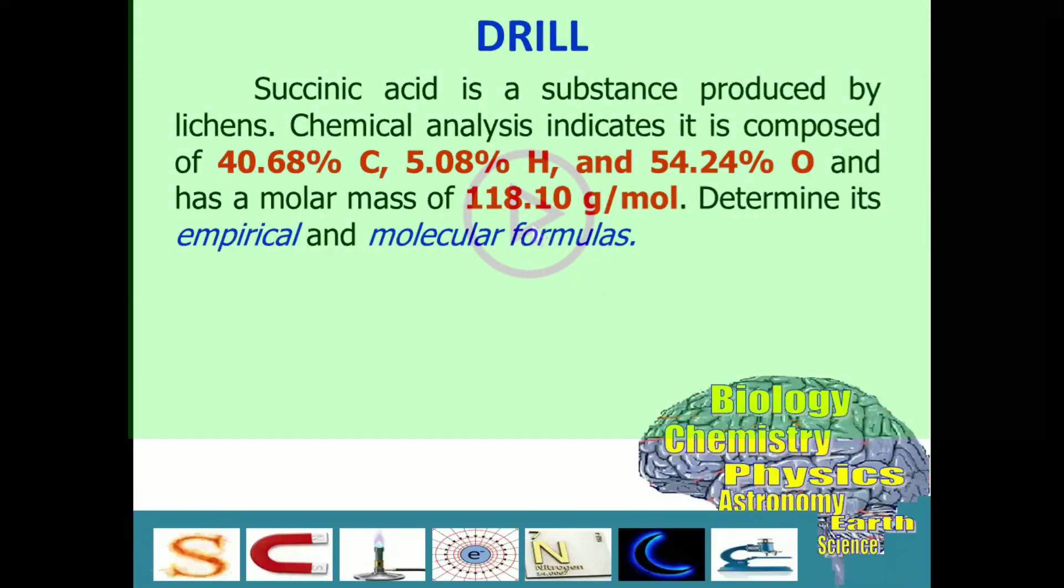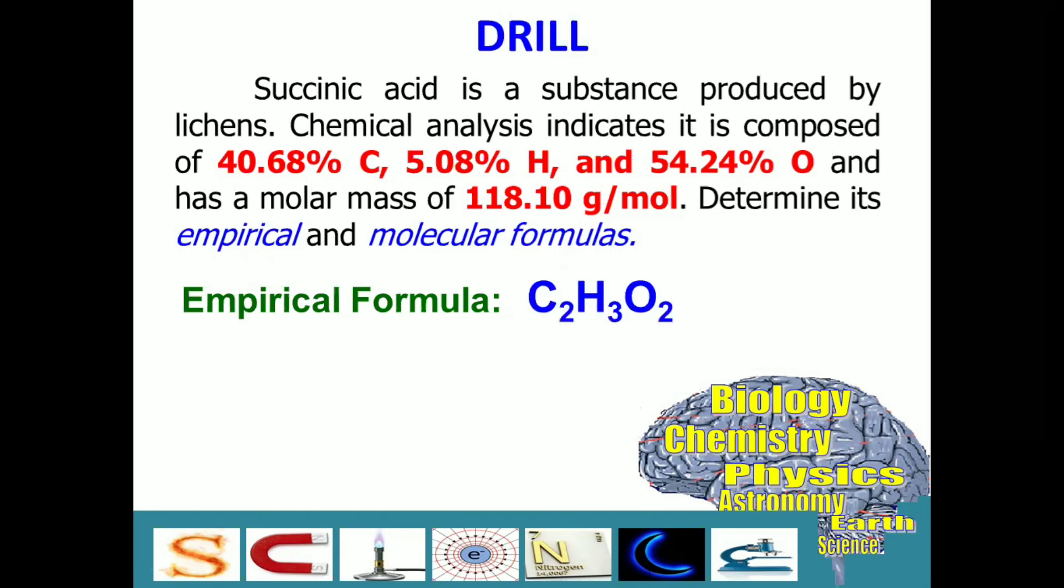Let us now check your answers. The correct empirical formula for succinic acid is C2H3O2. Then its molecular formula is C4H6O4.